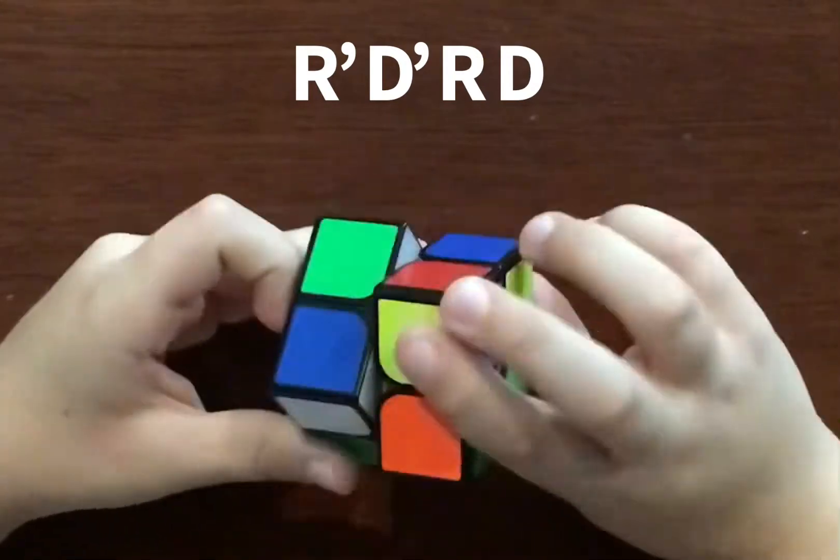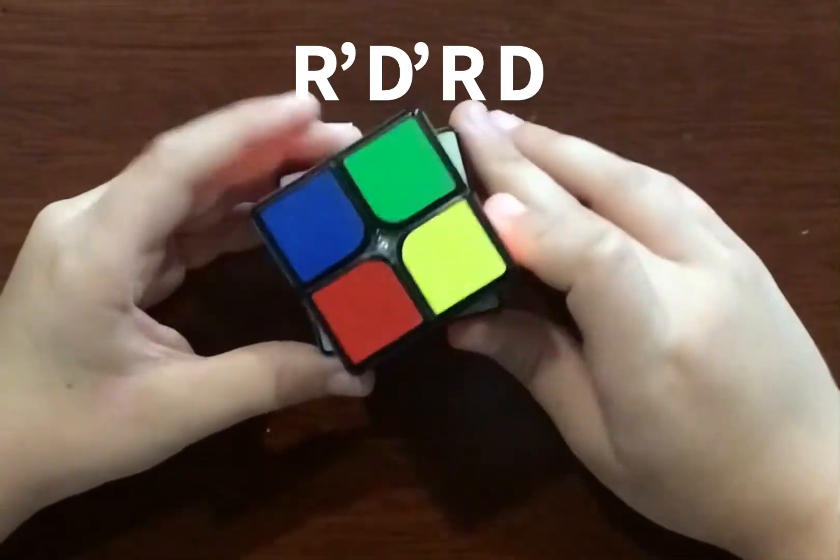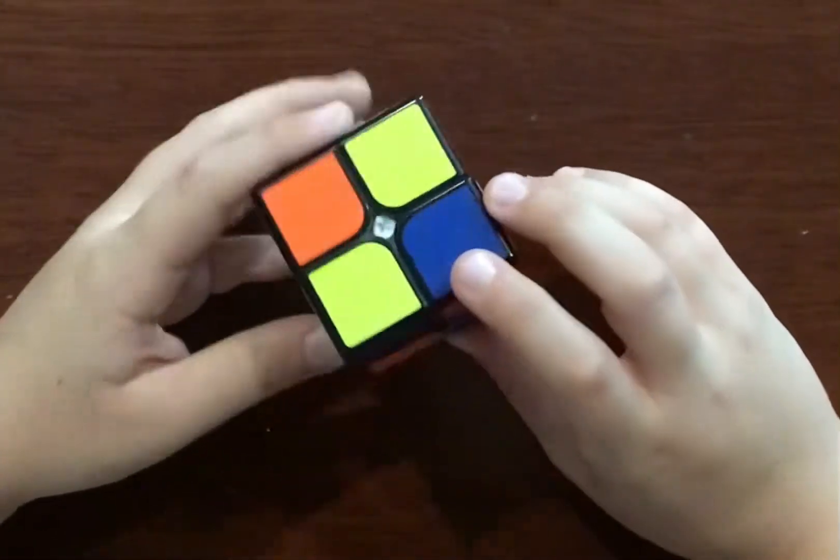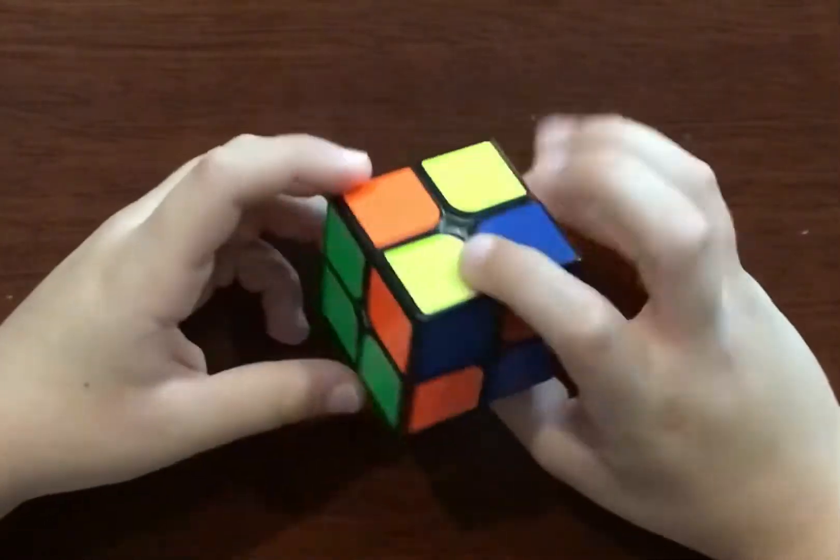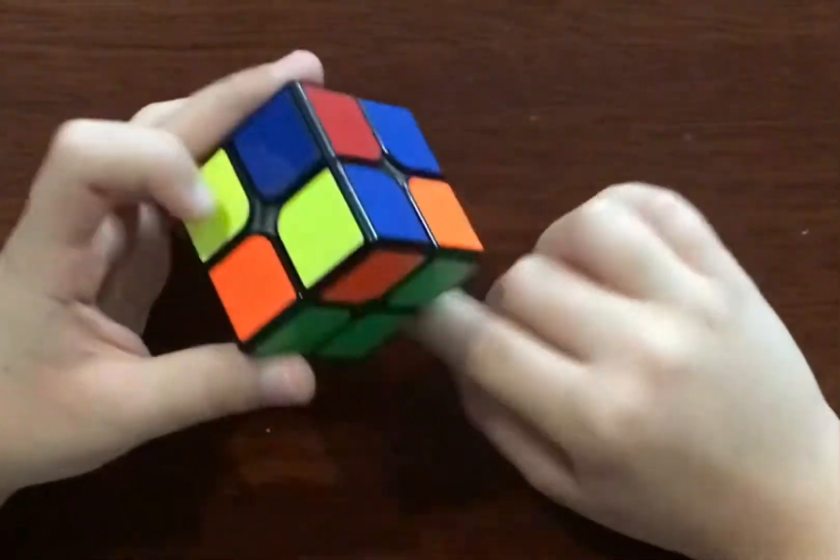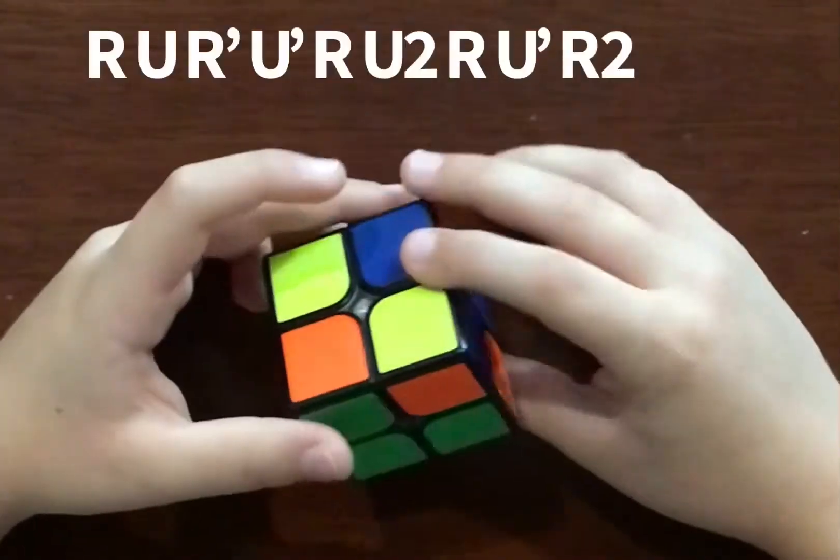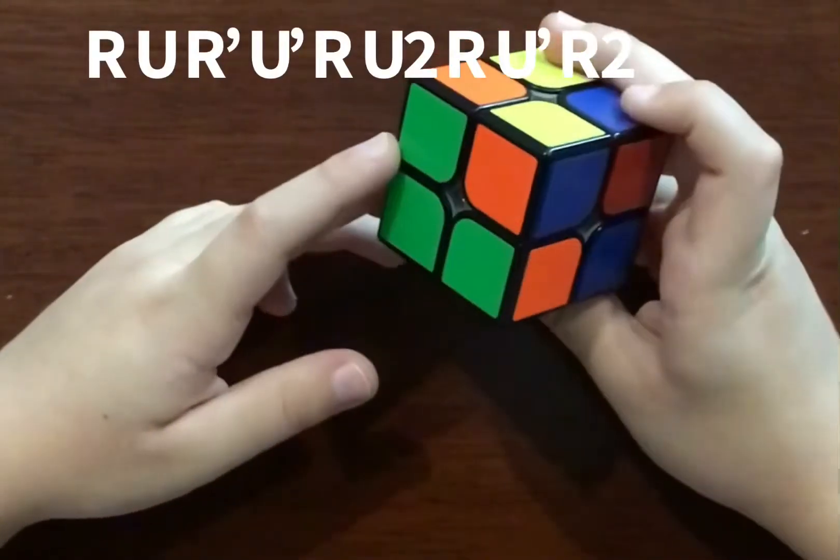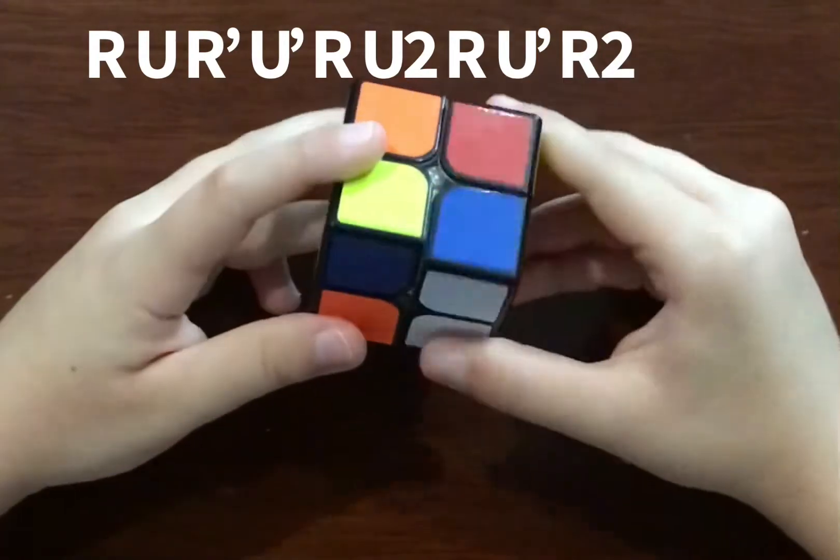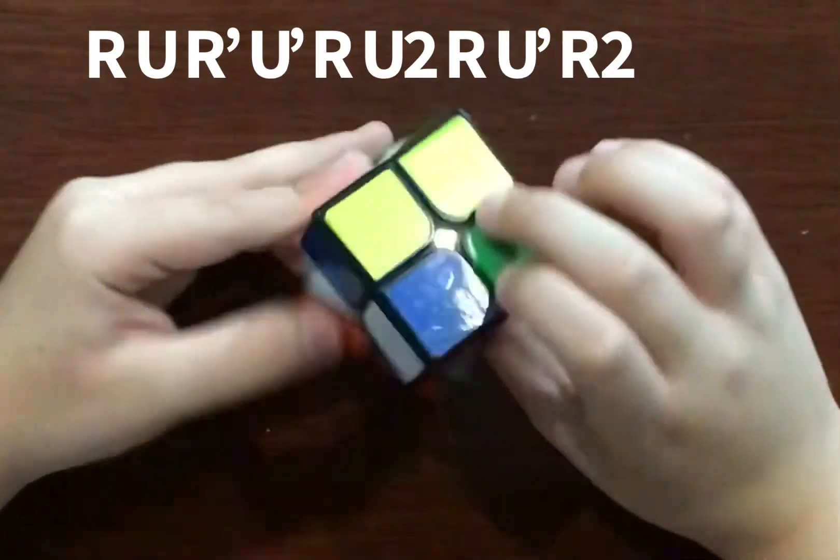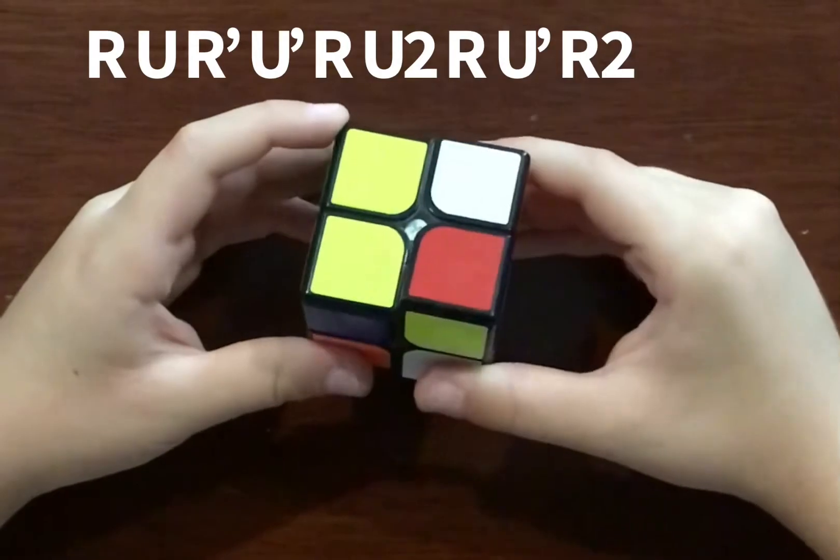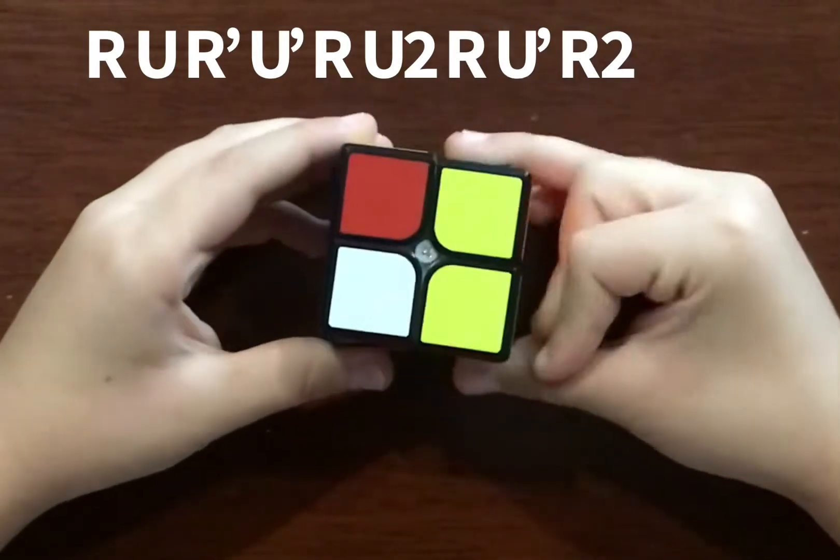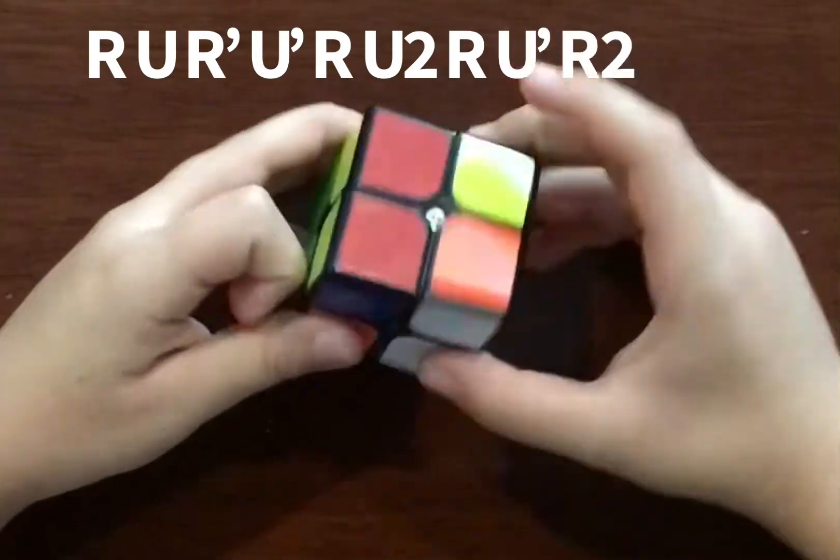Now there are going to be two cases you need to solve for the entire layer. This is how you do it if you get this case with the bar. You do this algorithm: R, U, R prime, U prime, R, U2, R, U prime, R2.